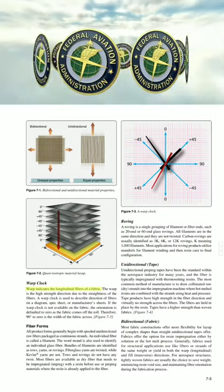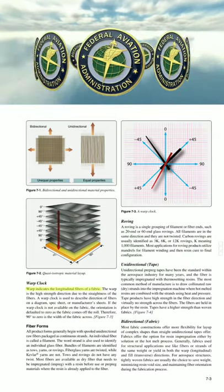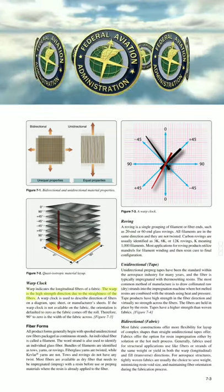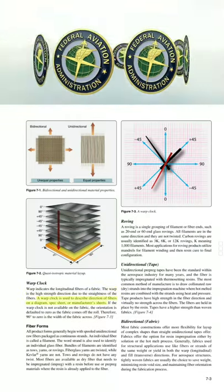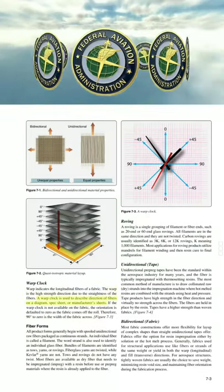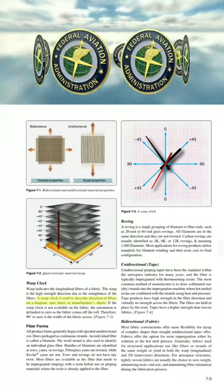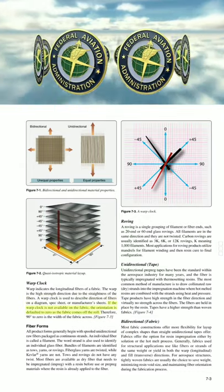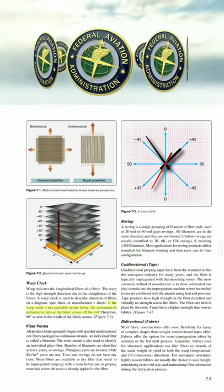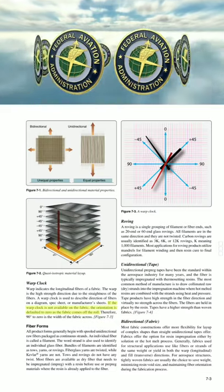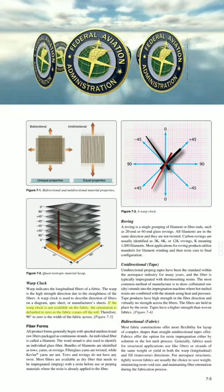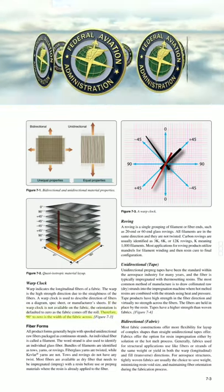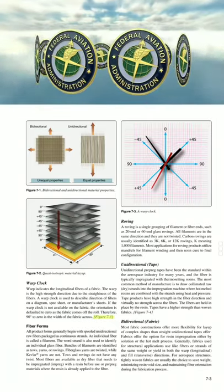Warp clock. Warp indicates the longitudinal fibers of a fabric. The warp is the high-strength direction due to the straightness of the fibers. A warp clock is used to describe the direction of fibers on a diagram, spec sheet, or manufacturer's sheets. If the warp clock is not available on the fabric, the orientation defaults to 0 as the fabric comes off the roll. Therefore, 90 degrees to 0 is the width of the fabric across.